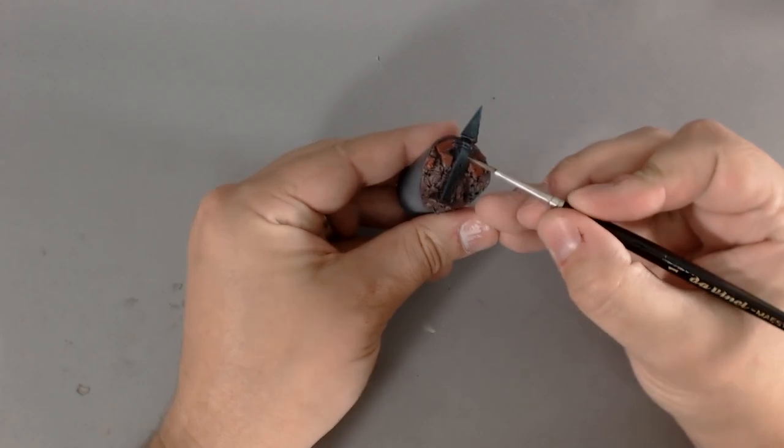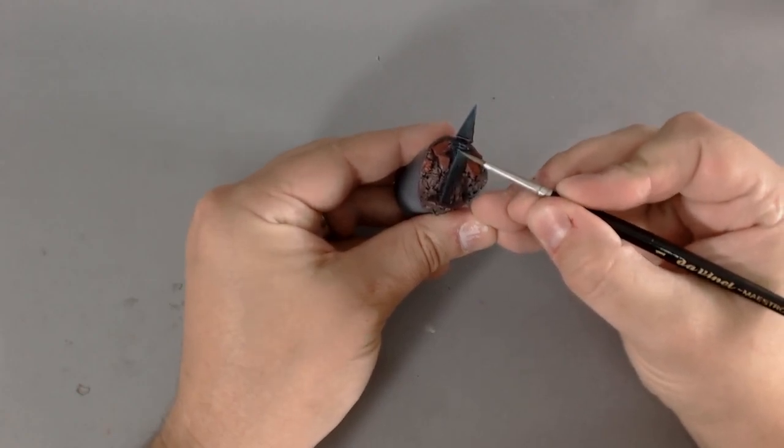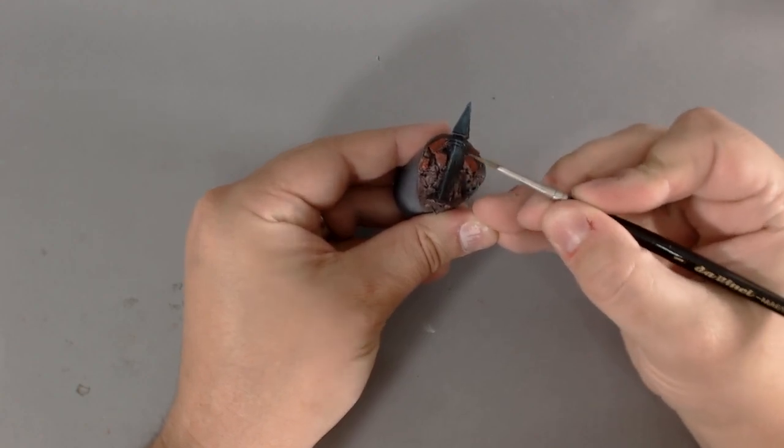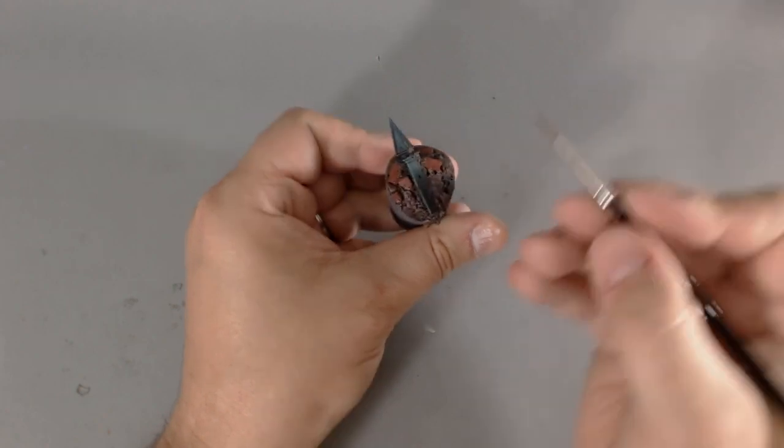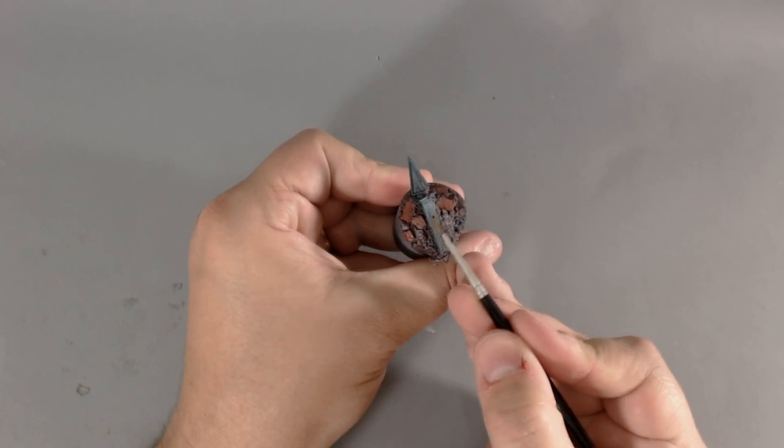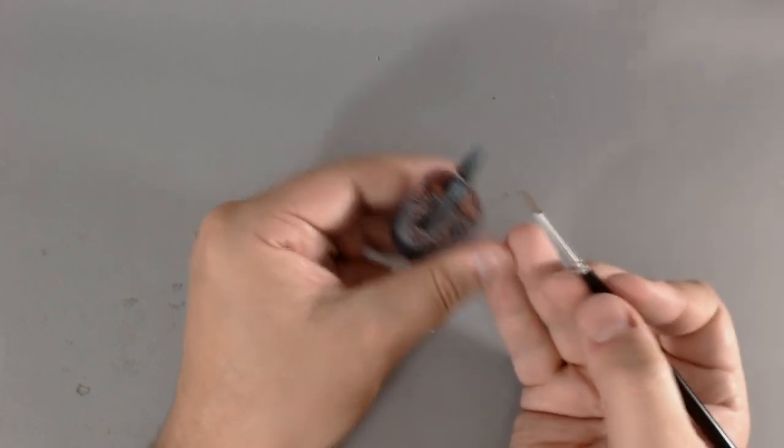I'm going to add some highlights to the wall end piece here, and this is a mix of the Stegadon Scale Green and GW's Administratum Grey. And this should just give us a nice highlight.